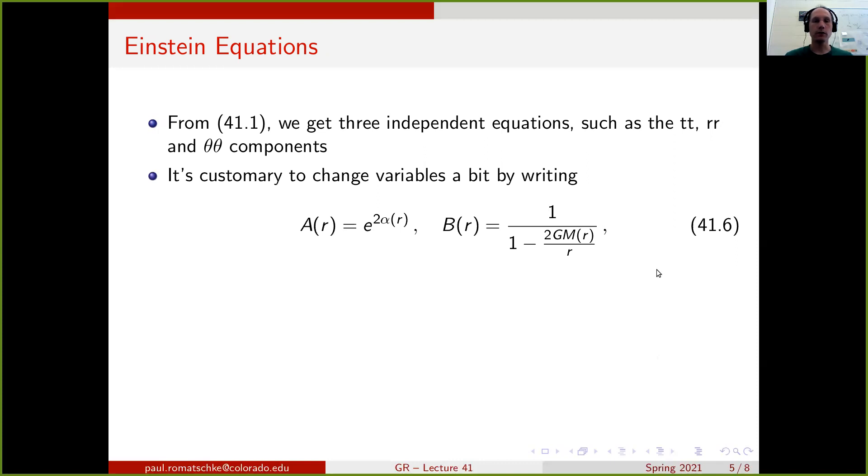We can look at those equations as they are, but it is customary and simplifies quite a bit if we do a change of variables. In particular, instead of using the metric function A of r, we want to use e to the 2 alpha of r, where both A and alpha are arbitrary functions. And we want to express B of r as 1 over 1 minus 2GM of r over r, where again M is an arbitrary function.